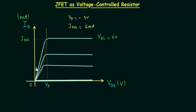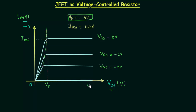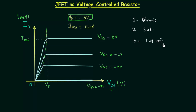The second curve is obtained when VGS equals minus 1 volt, the third when VGS equals minus 2 volts, and when VGS equals the pinch-off voltage, ID remains 0 always — even when you increase VDS. So the last curve is for VGS equal to minus 3 volts, which is the pinch-off voltage. There are four regions in the output characteristics: the ohmic region, the saturation region, the cutoff region, and the breakdown region.